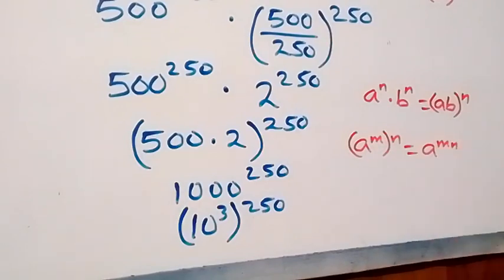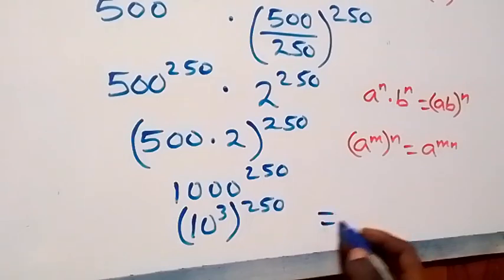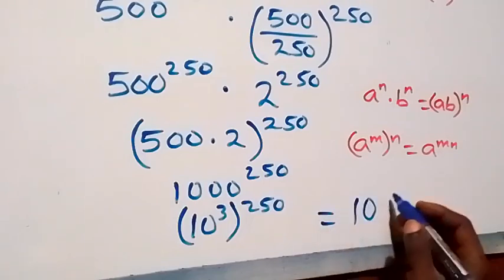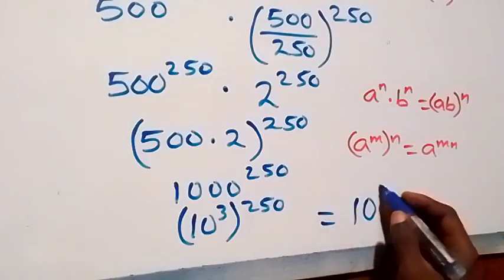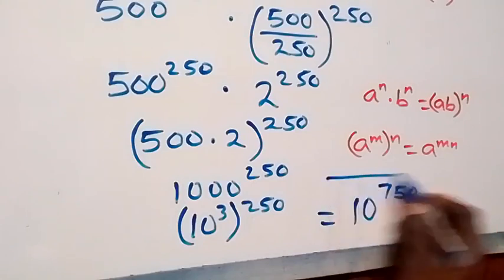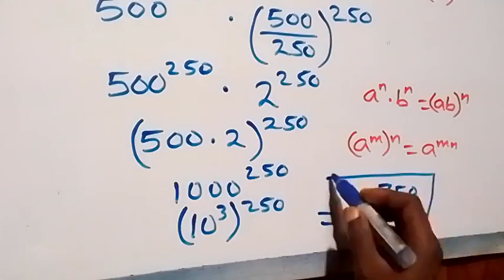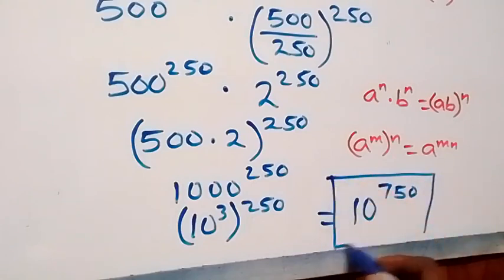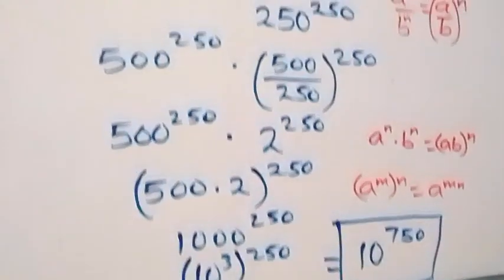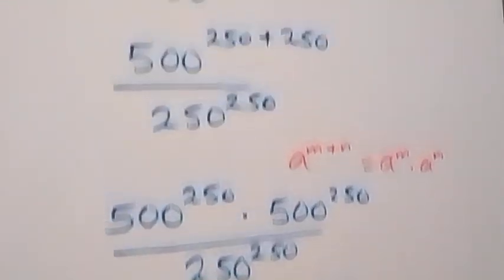At this step, the powers multiply: 3 times 250 equals 750. This becomes 10 raised to power 750. So the answer to this given problem is 10 raised to power 750.